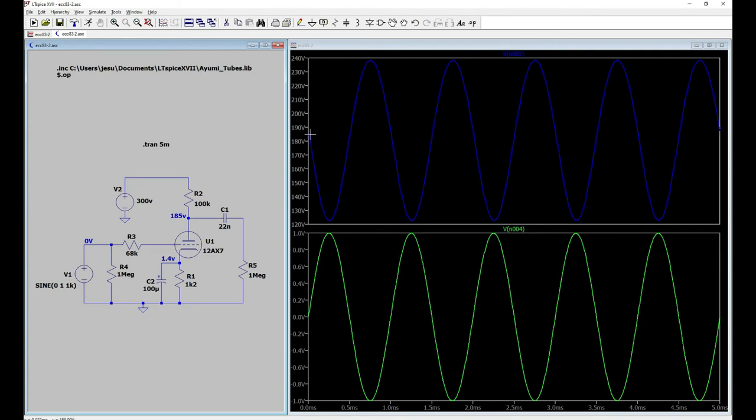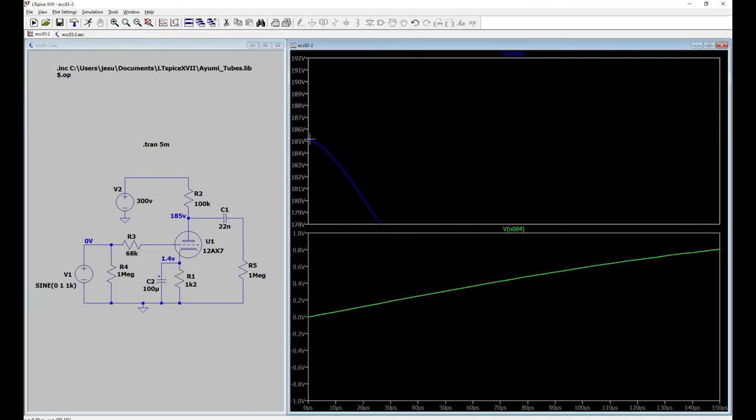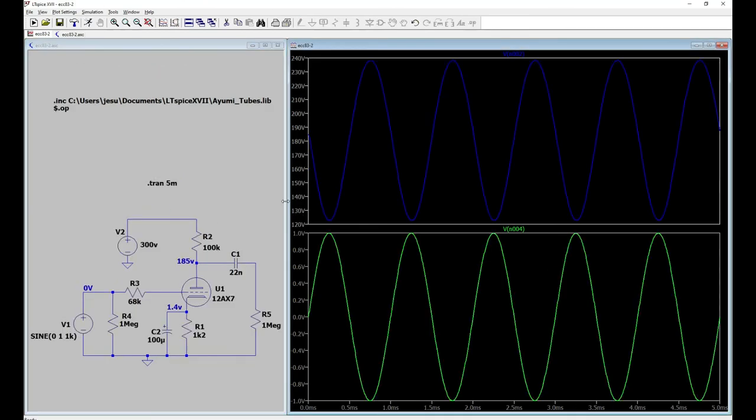This is the anode voltage. It is bigger and inverted. It has a DC component of 185 volts that is the voltage of the operating point and goes from near 120 volts to 240 volts, very big.